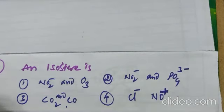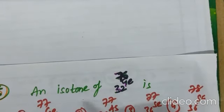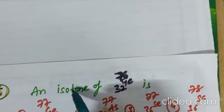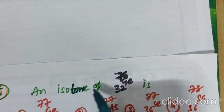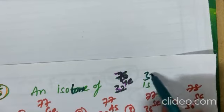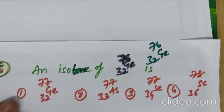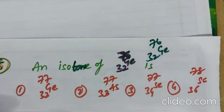You can check leftover answers also. Isotone of 32 germanium 76. 30 to germanium 76. Atomic number different. Mass number different. If number of neutrons are same. Then, it is said to be isotone.